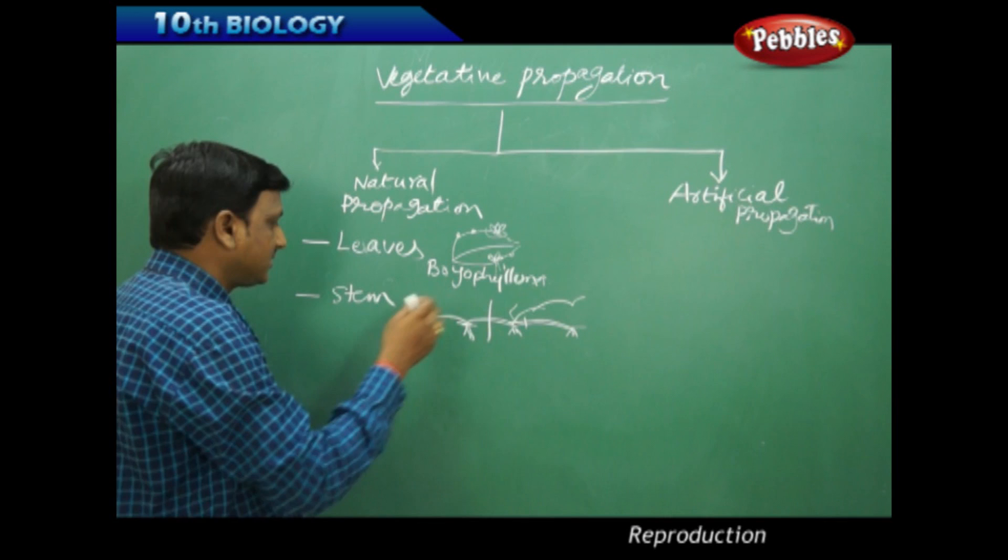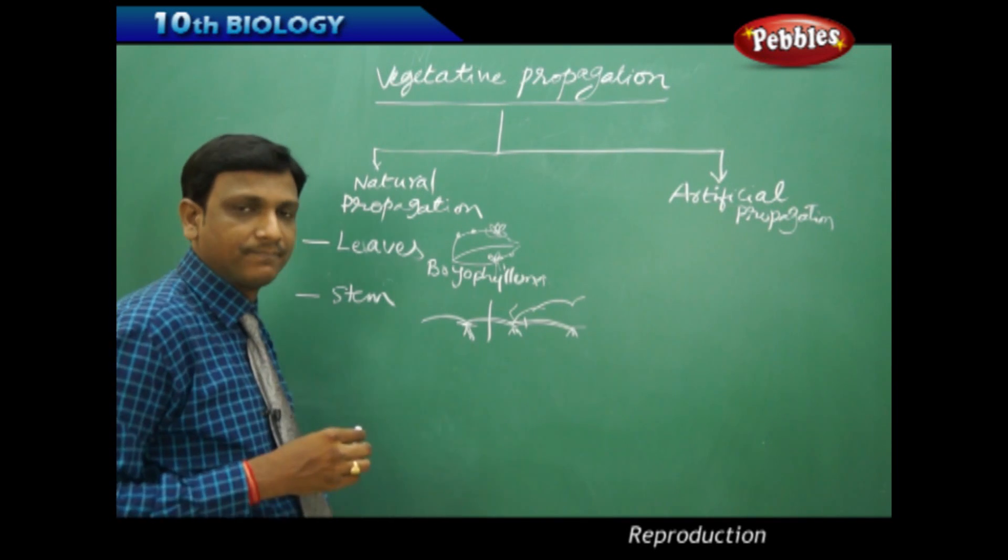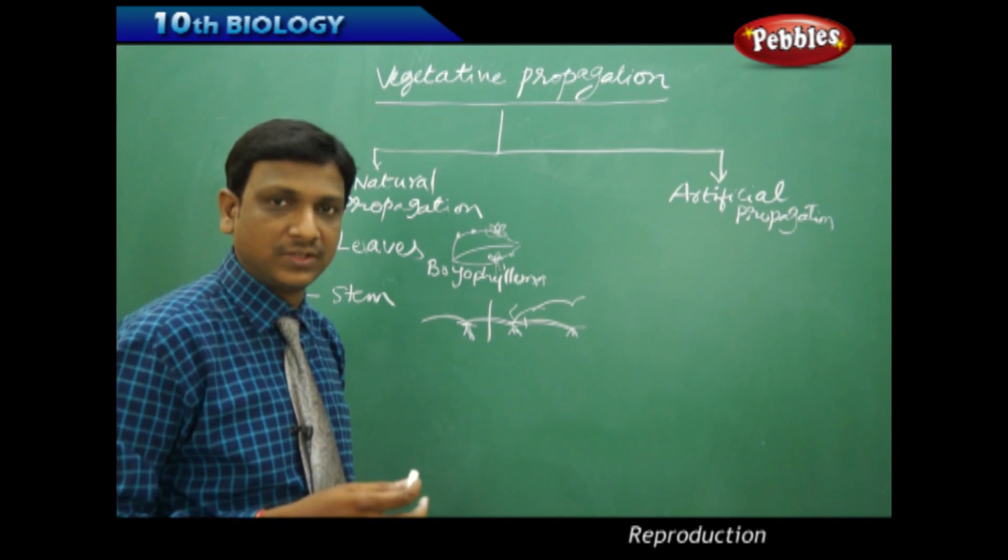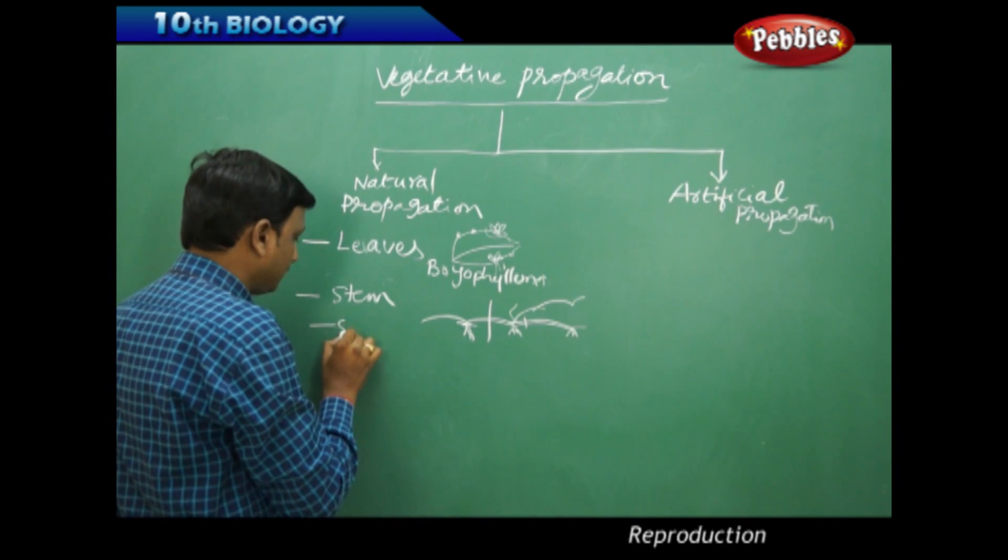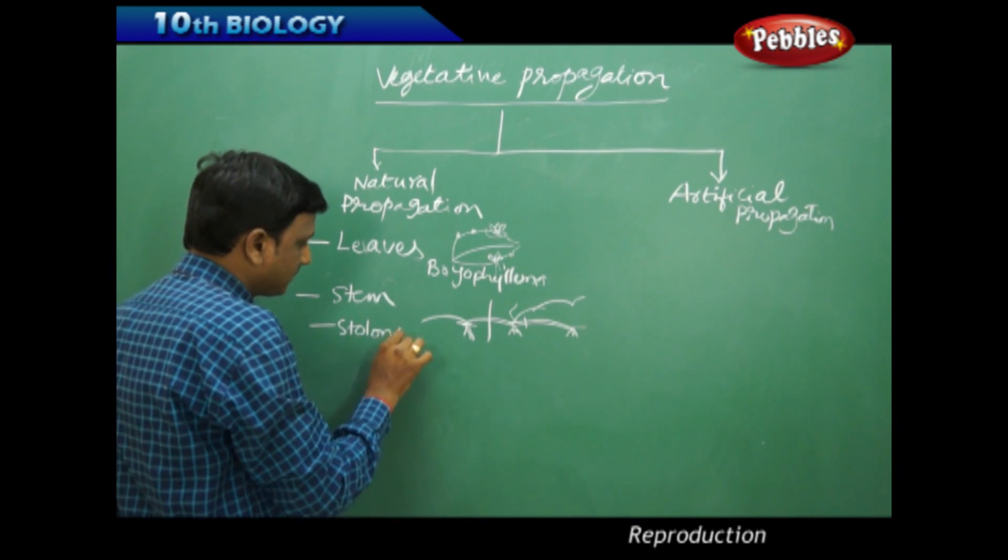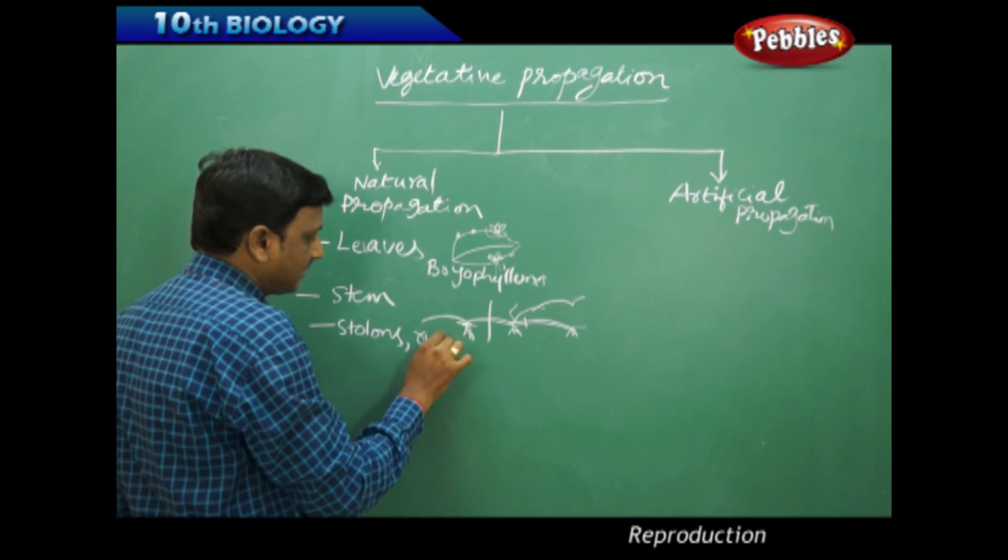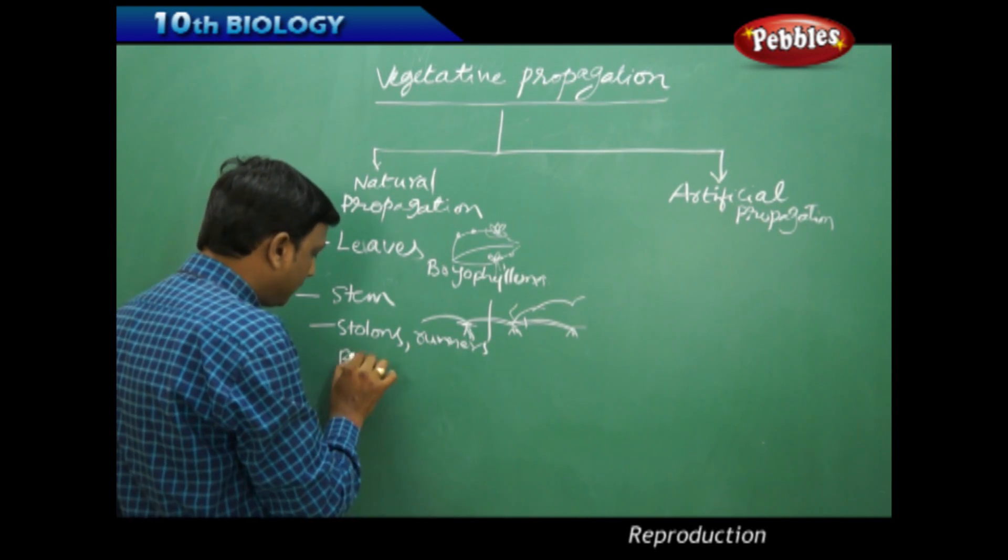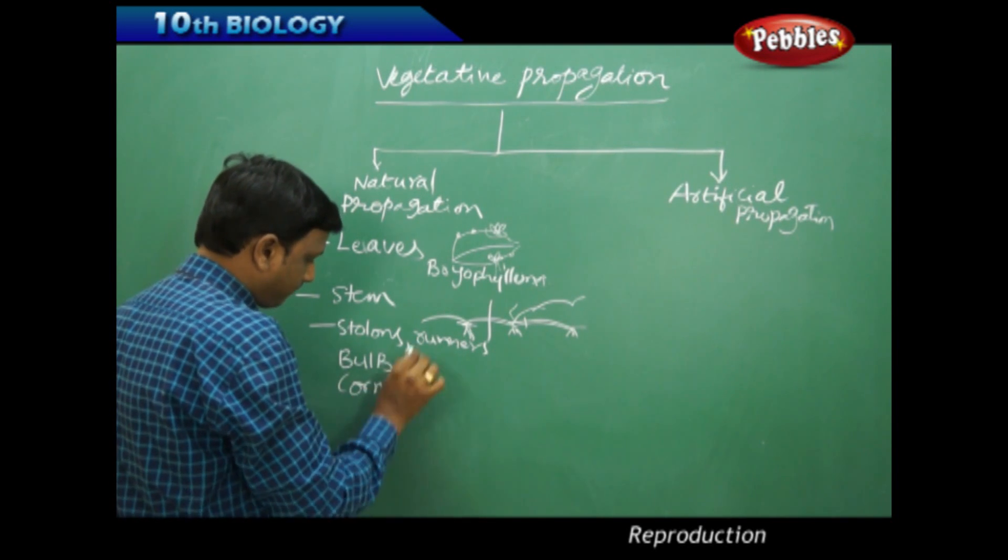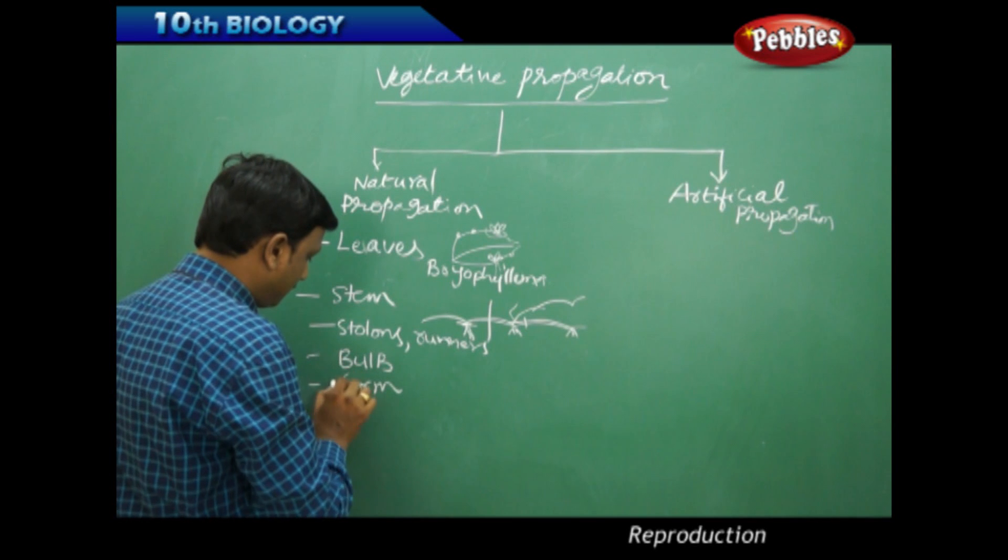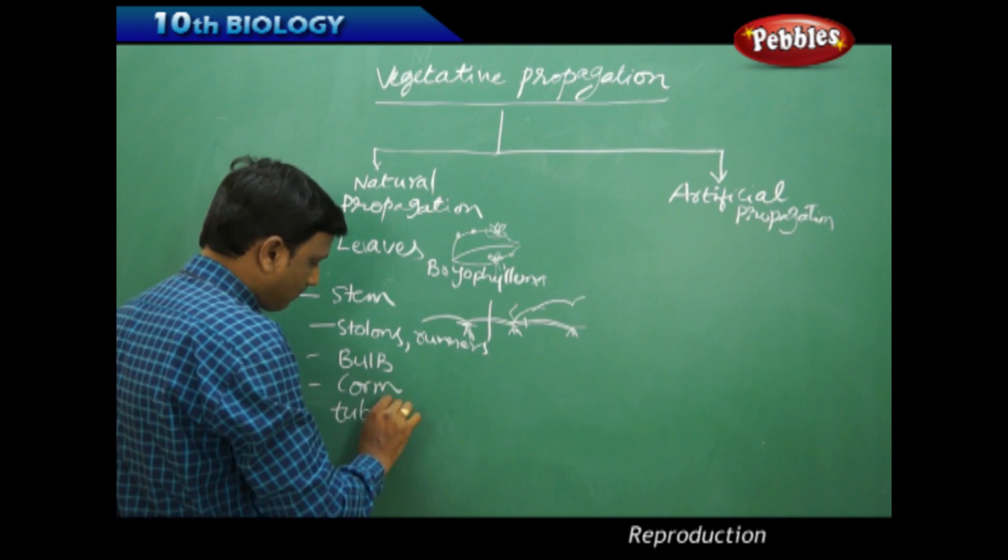We also observe propagation through the stem in other cases like stolons and runners, bulb, corm, and tuber.